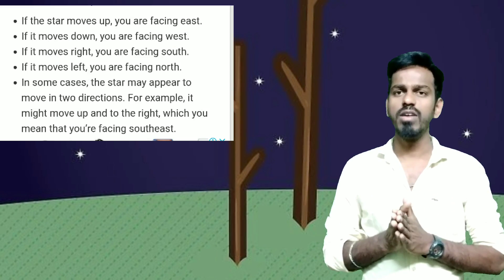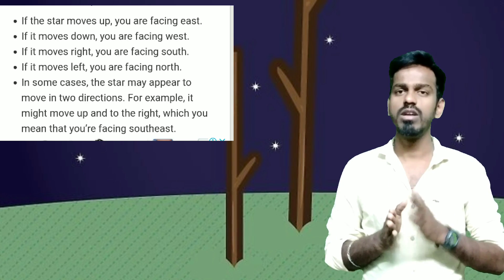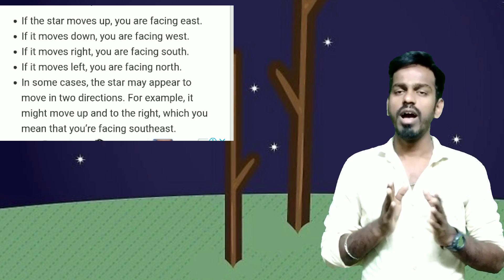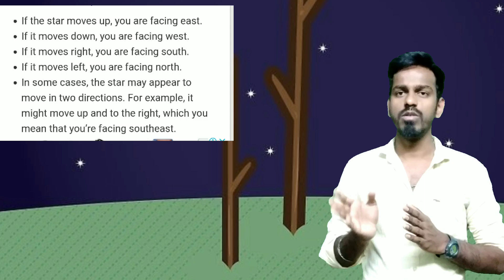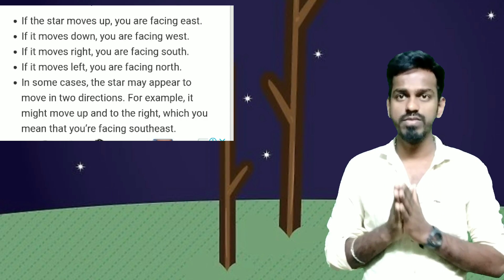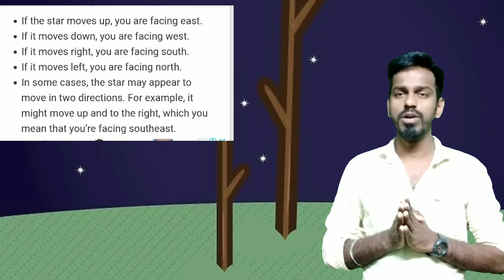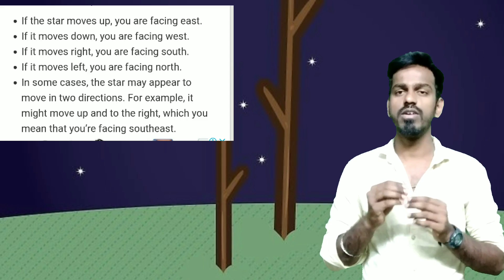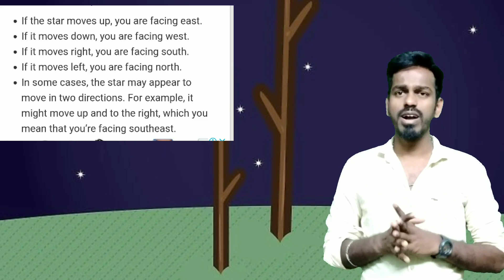We can go to the East, West, North and South. If you start at the left side, you are at the North side. If you start at the right side, you are at the South side. If you face right, that is the East side. And the West side is behind.